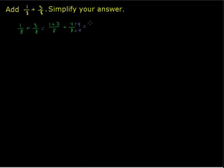And 4 divided by 4 is 1. And 8 divided by 4 is 1 half. So the sum of 1 eighth plus 3 eighths is simplified as 1 half.